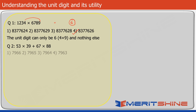Now try this question. Here are your options. This is a simple question — I've just inserted an extra mathematical operation. 9 into 3 gives me 27, so the unit digit is 7. Then 7 into 8 is 56, so the unit digit is 6. 7 plus 6 is 13, so the final unit digit is 3, and hence the answer is again option 4.